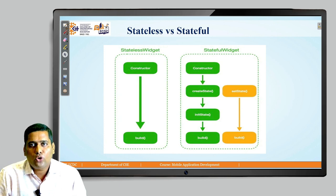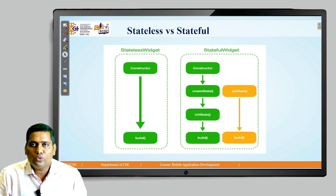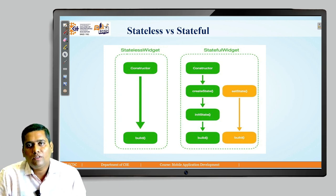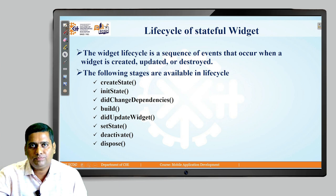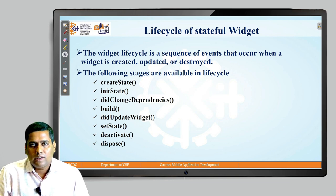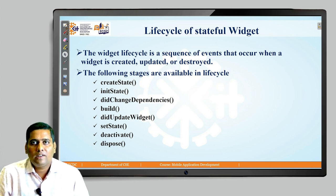In stateful widgets you need to follow multiple steps and go through multiple stages to create and use states. We have methods called createState and initState which come before build. We also use the setState method when the application is in a running state. Stateful widgets have their own lifecycle — a sequence of events that occurs when a widget is created, updated, and destroyed. There are 7 to 8 methods in the lifecycle.